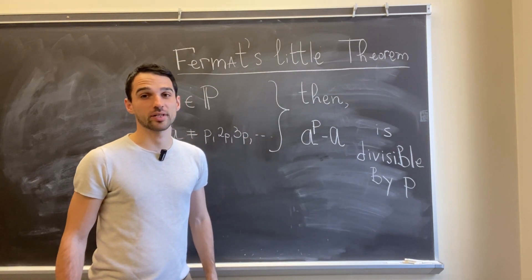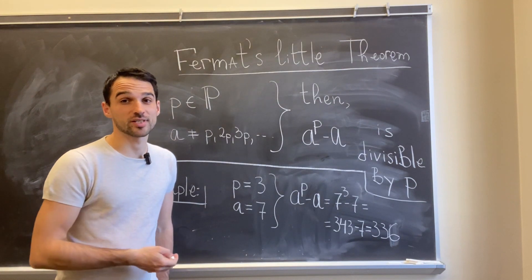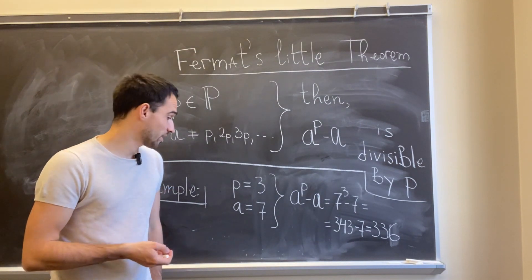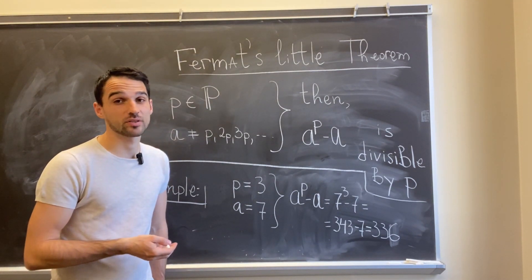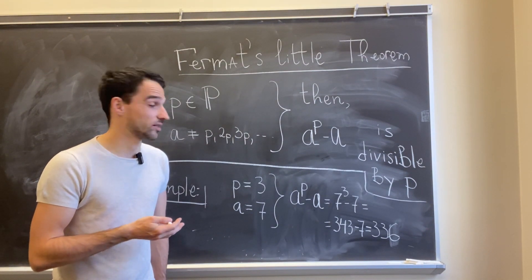Let's look at one quick example. So let's take p equals 3, for example. It's a prime number. And let a be 7. So obviously 7 is not equal to 3, 6, 9, etc.